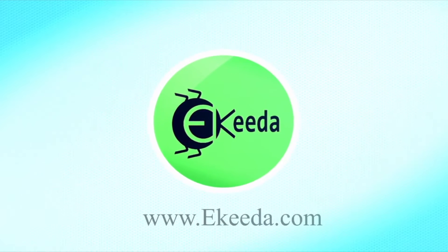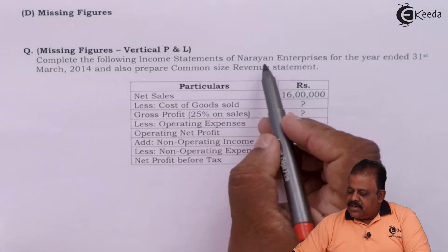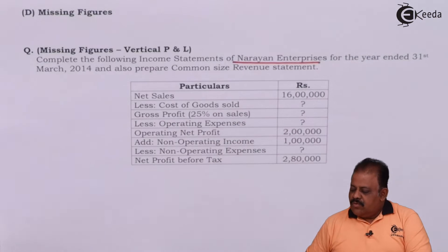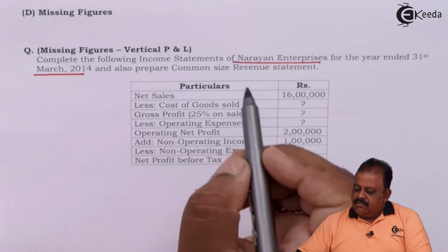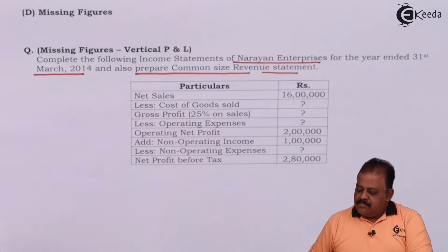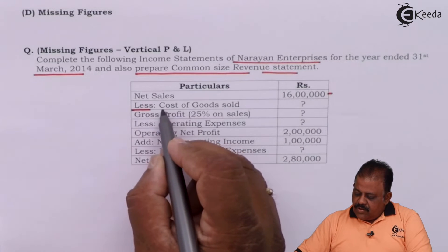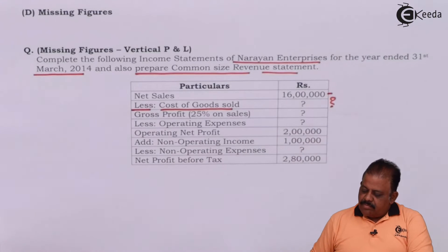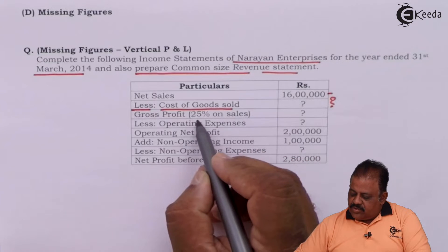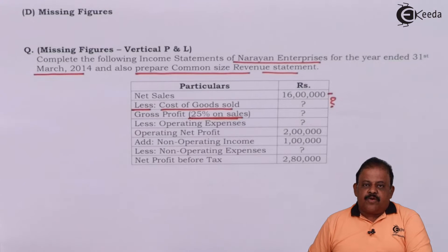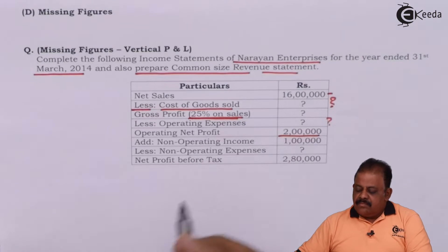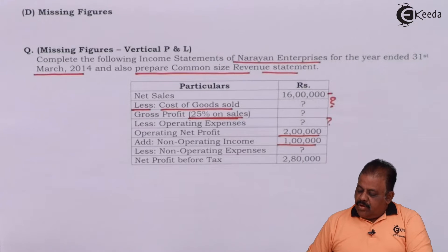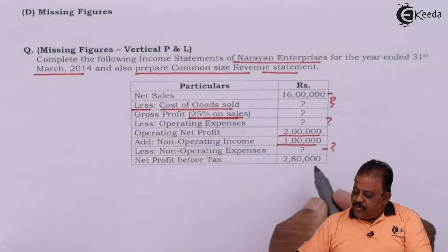Complete the following income statement of Narayan Enterprises for the year ended 31st March 2014, and also prepare the common size revenue statement. Net sales will be income less cost of goods sold — cost of goods sold is not given. Gross profit is 25% on sales, so there is a hint for calculation of gross profit. Operating expenses are not given. Operating net profit is given as 2 lakhs. Non-operating income is 1 lakh, non-operating expenses are not given, and net profit before tax is 2 lakh 80 thousand.